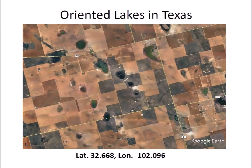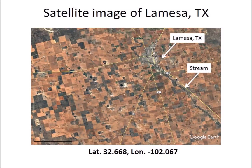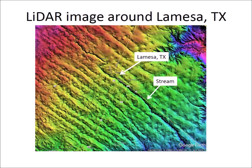Kaczorowski mentioned the oriented lakes in Texas. This satellite image is southwest of La Mesa, Texas. The lakes are not elliptical, but they are neatly arranged in rows oriented in a northwest-southeast direction. Looking at the oriented lakes from a higher point of view that includes the city of La Mesa, we can see a stream running in the same direction as the oriented lakes — the Colorado River in Texas originates south of Lubbock near La Mesa. The LiDAR image reveals that the orientation of the lakes is due to the washboard-like geology of the terrain, with the lakes located along the trenches.